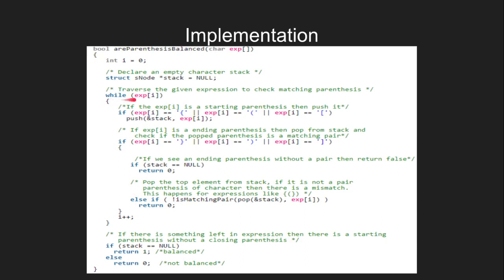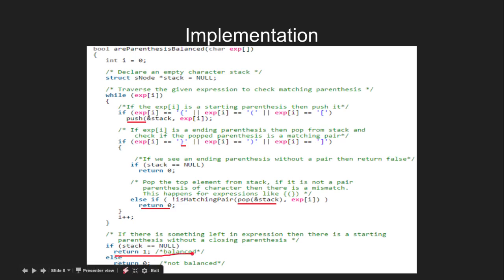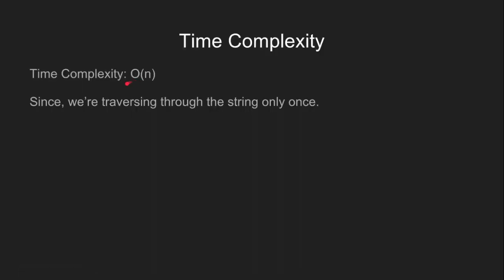Let's look at the implementation of this problem. We traverse through the entire string. When we get an opening bracket, we push it into the stack. When we get a closing bracket, we pop one element from the stack and check whether there is a matching pair or not. If there is a matching pair, we continue; else we return 0, meaning the string is not balanced. At the end, we check whether the stack is empty or not. If the stack is empty, we return 1 — that is a balanced string — else it is an unbalanced string. The time complexity for this problem is O(n) since we are traversing through the string only once.